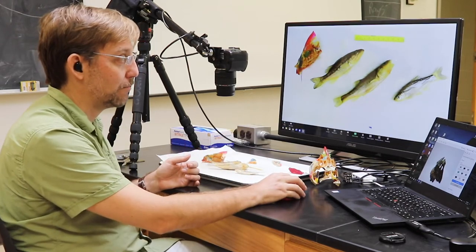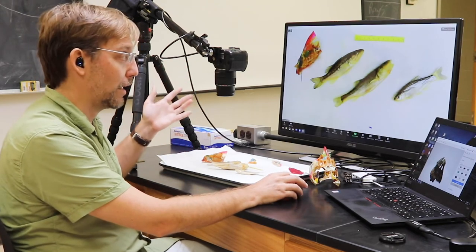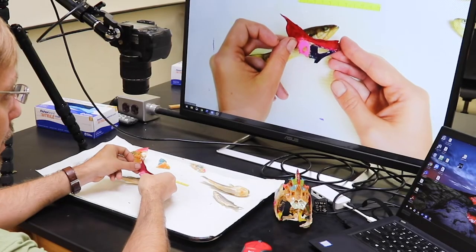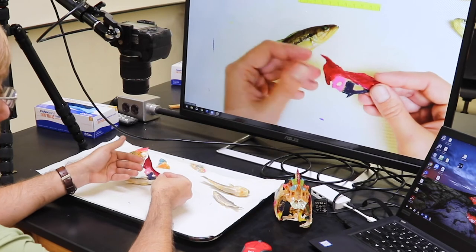So here we have a couple of minnow species hooked up with this high-resolution digital camera so that we can create really good images to point out some of the specific features on some of these very unique fishes we have in our Louisiana waters.